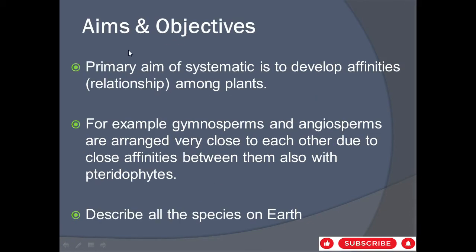Now we will discuss the aims and objectives of systematics. The primary aim of systematics is to develop affinities among plants — identifying similarities and differences between plants and classifying them accordingly. For example, gymnosperms and angiosperms are arranged very close to each other. Systematics helps describe all species on Earth.